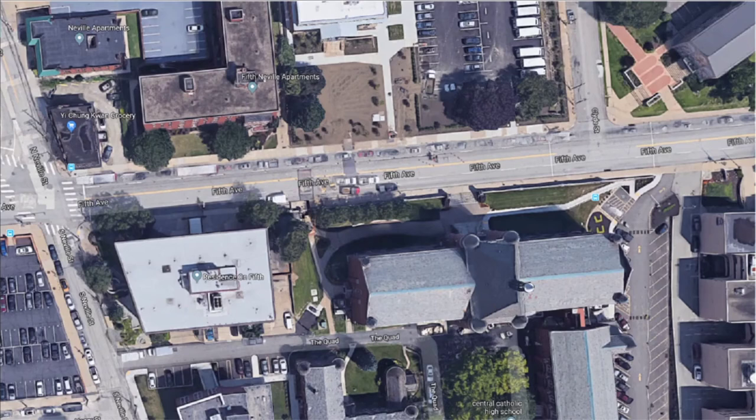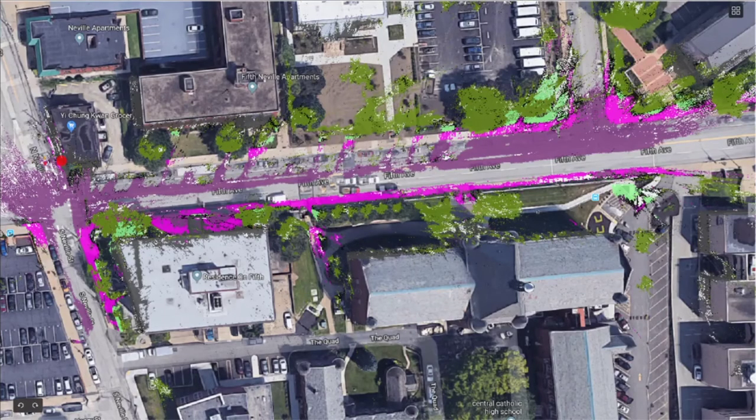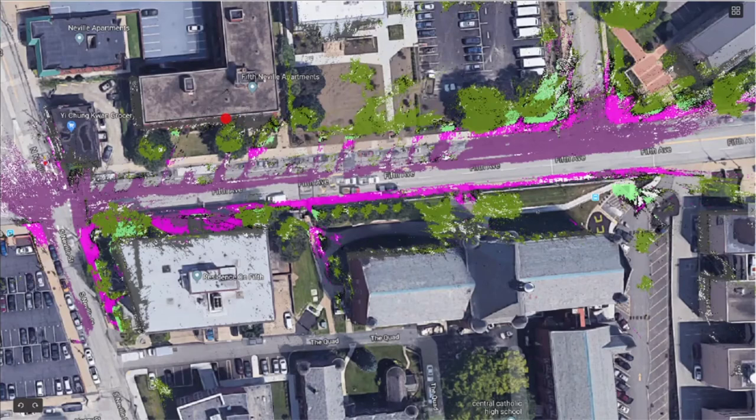So for our little piece of a city, the map could look something like this. So here we see that we have points labeled as road, sidewalk, buildings, trees, vegetation, and some other smaller classes.